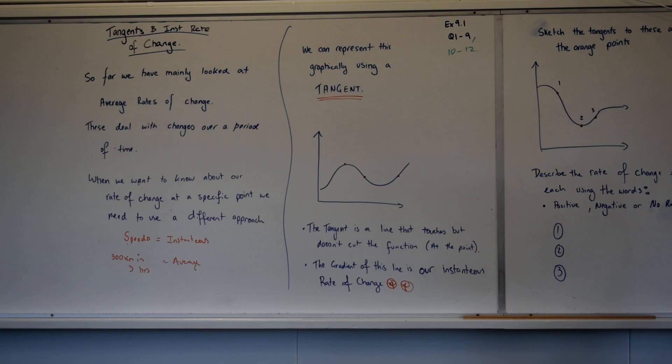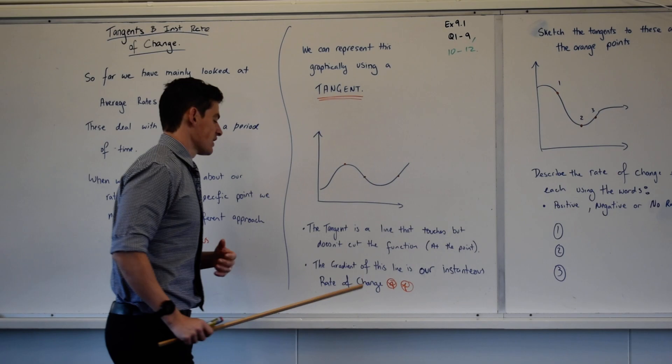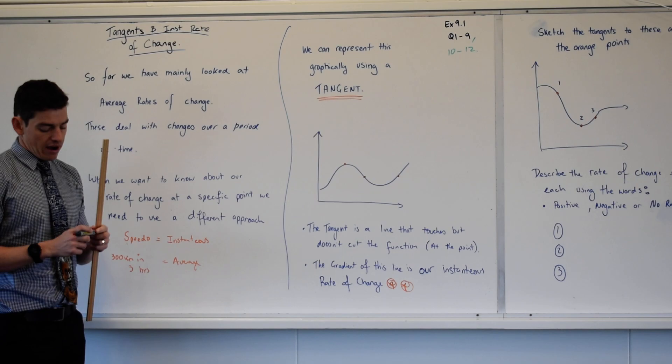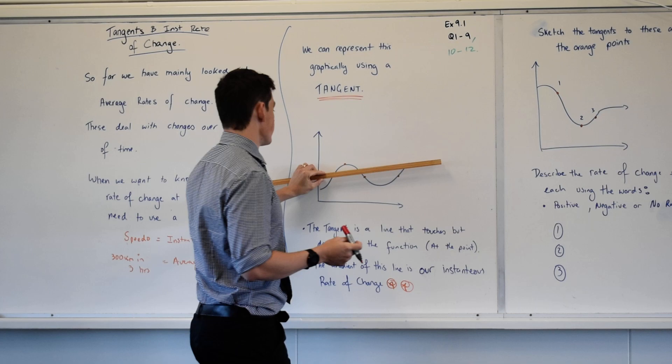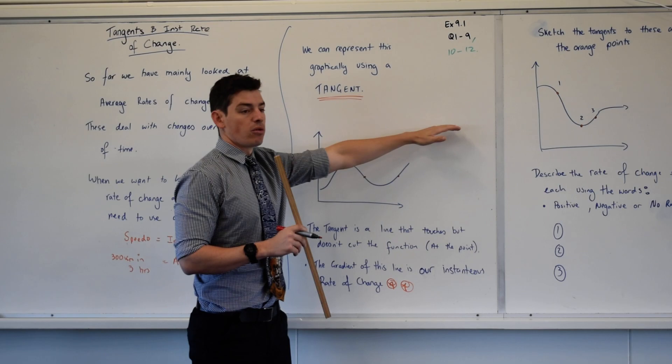So to represent this graphically, we use a thing called a tangent. The tangent is a line, and my description here is not very good, but it will get better once you see. It's a line that doesn't cut the function but gets as close as it possibly can. So it's supposed to represent the gradient or the rate of change of our function at this point in time. So if I was to draw a tangent here, I want it to get as close to this function as possible without cutting it. So you see that it goes along the edge, it doesn't quite cut it.